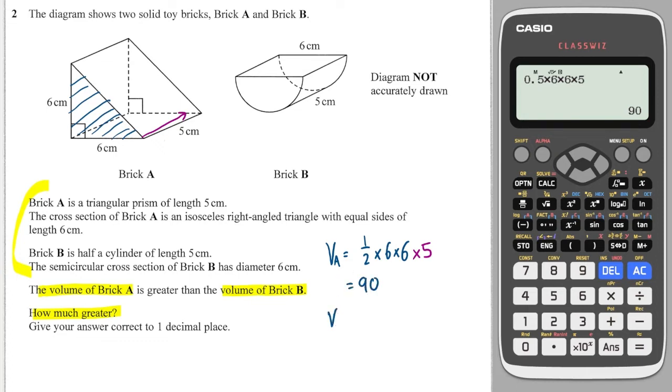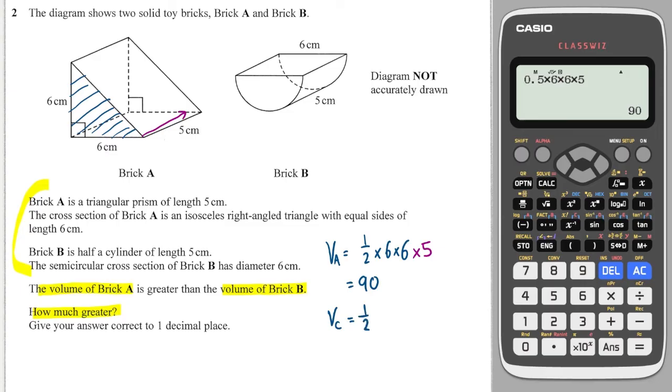And then the volume of the half cylinder is, well, first off, it is a half. And then we need to find the volume of the full cylinder, which will be the cross sectional area is going to be π r squared, where r is half the diameter, so 3. And then that is multiplied by how far through it is pushed the shape, which is 5. So we can do a half, because it's half of a cylinder, multiplied by the area of the cross section, which is π r squared, and then multiplied by how far it's pushed back, which is 5. And this gives me 70.7.